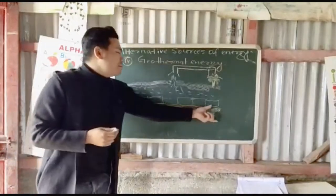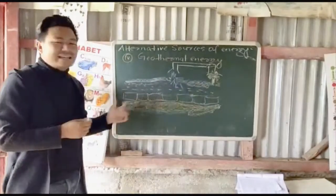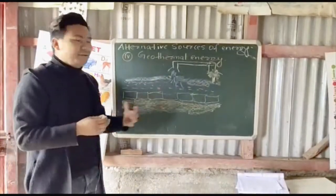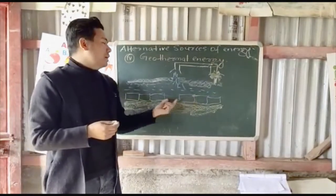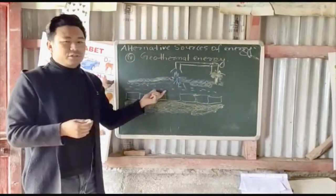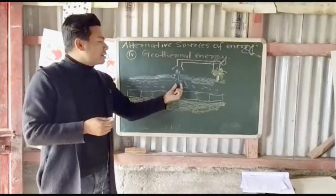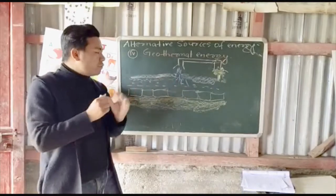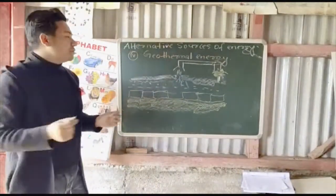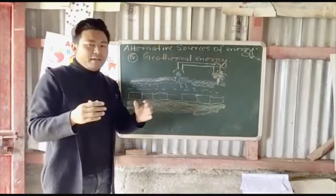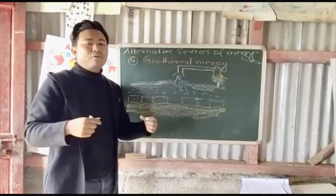This high-temperature magma heats up the earth's rock plates to very high temperatures. When water on the earth's surface comes in contact with these heated rocks, it gets heated and rises up as water springs. You must have heard about water springs that appear on different surfaces in mountains and denser areas.